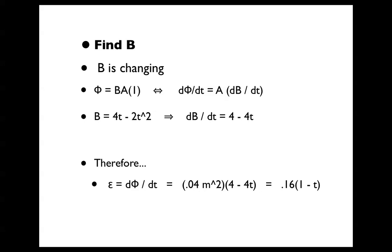And so d phi over dt equals the area times the derivative of the magnetic field. The question said that the magnetic field equals 4t minus 2t squared, so dB/dt equals 4 minus 4t.